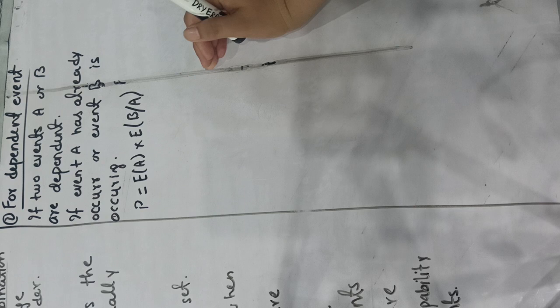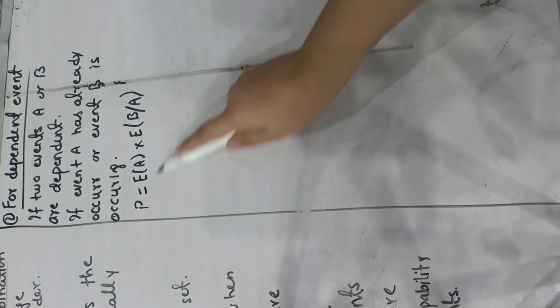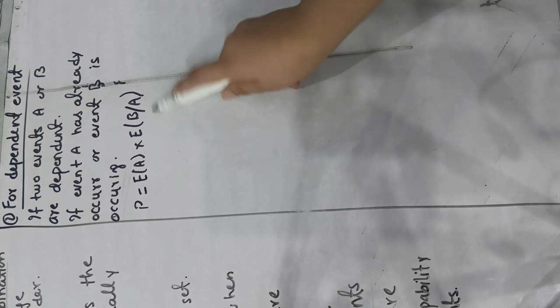So what you will do is you will apply E of A intersection B, meaning A has already occurred and B has occurred given A. So these were our rules of probability.